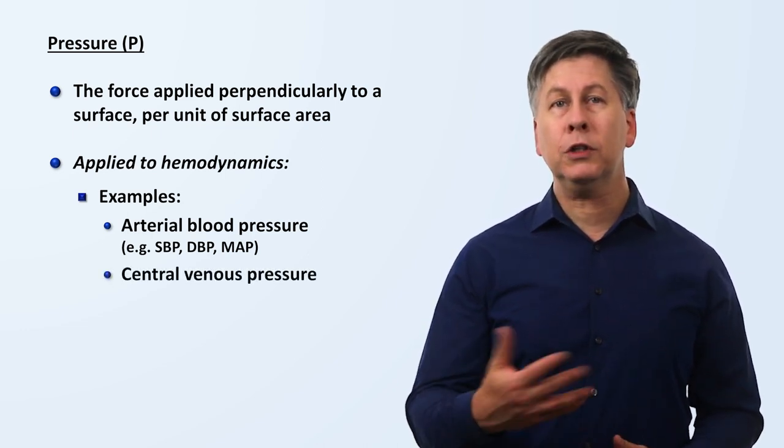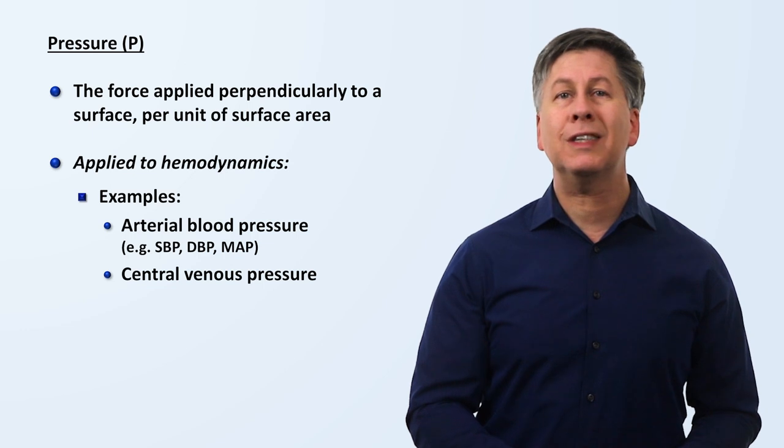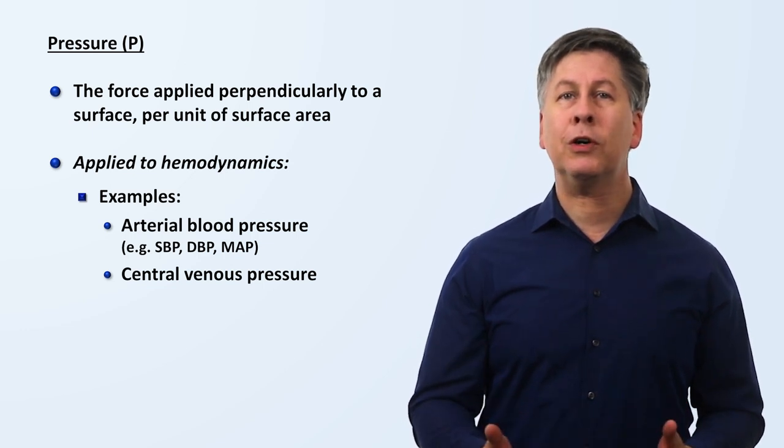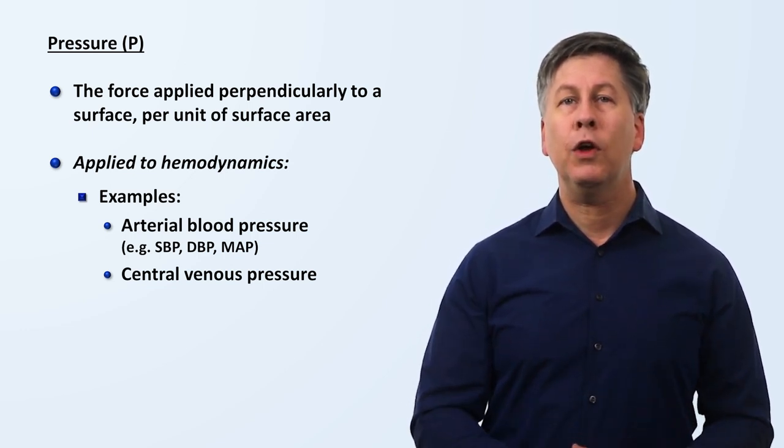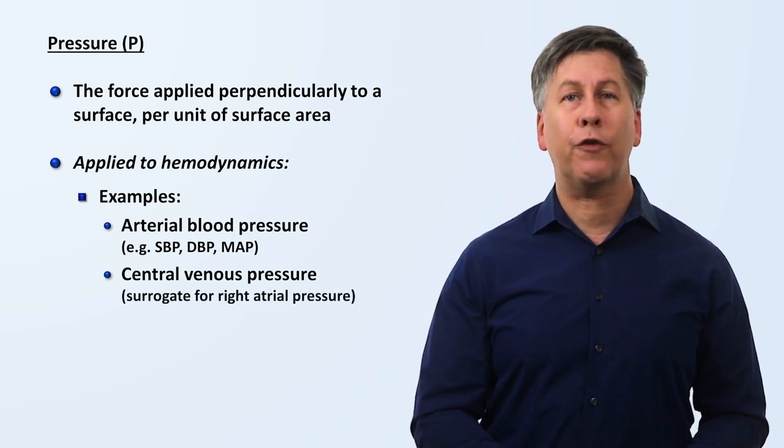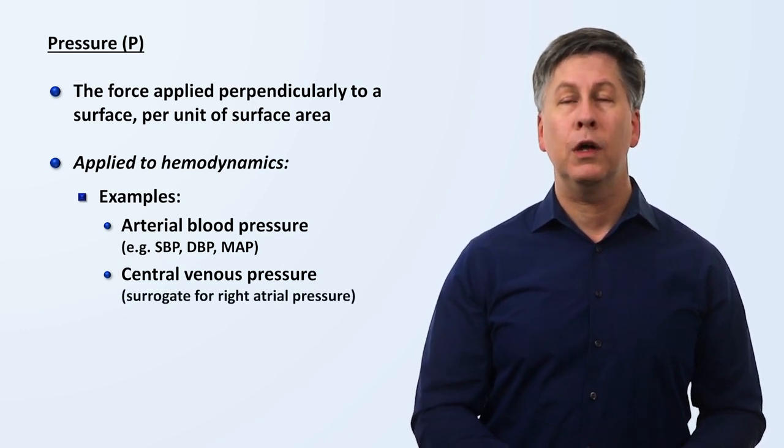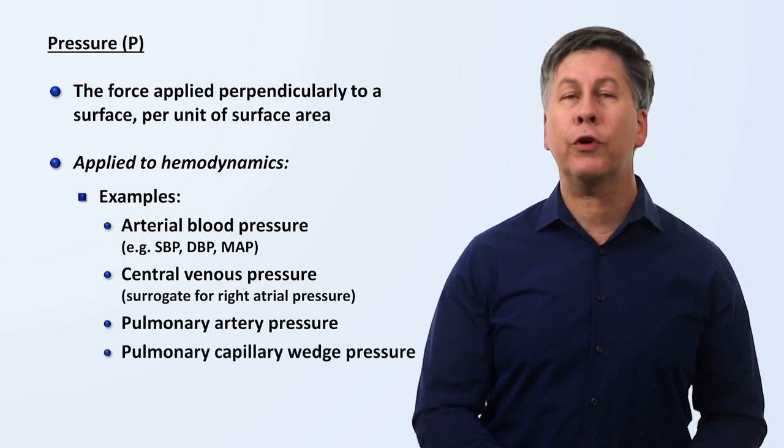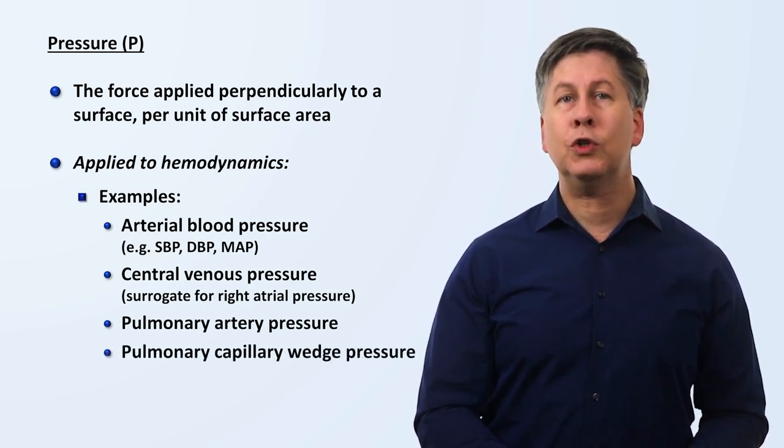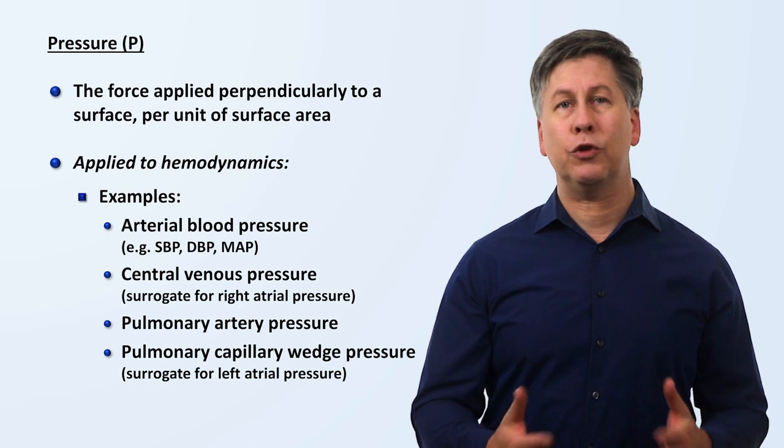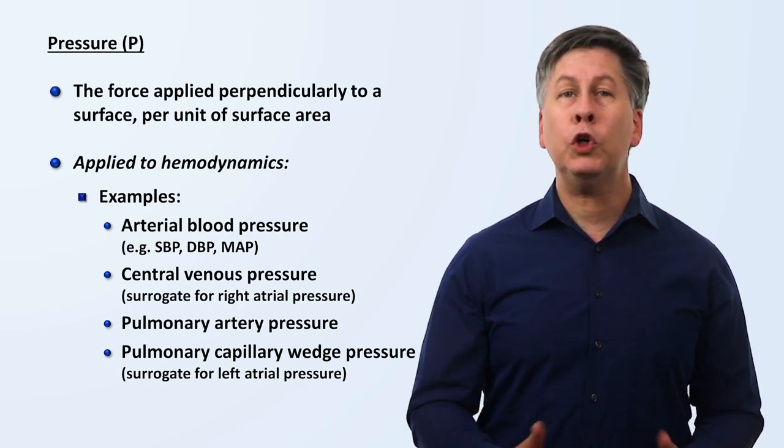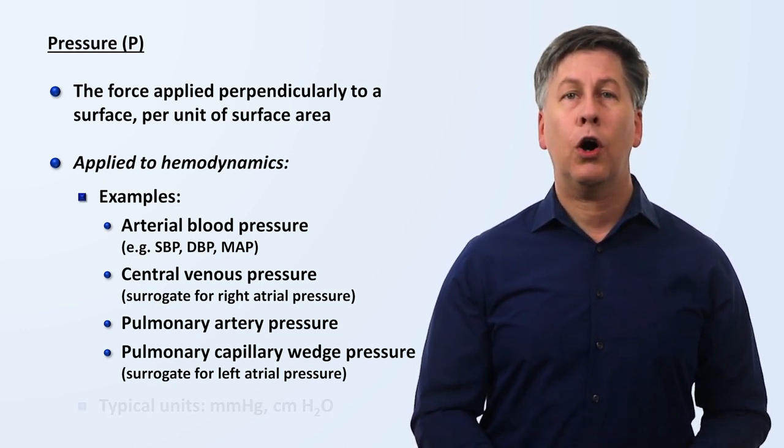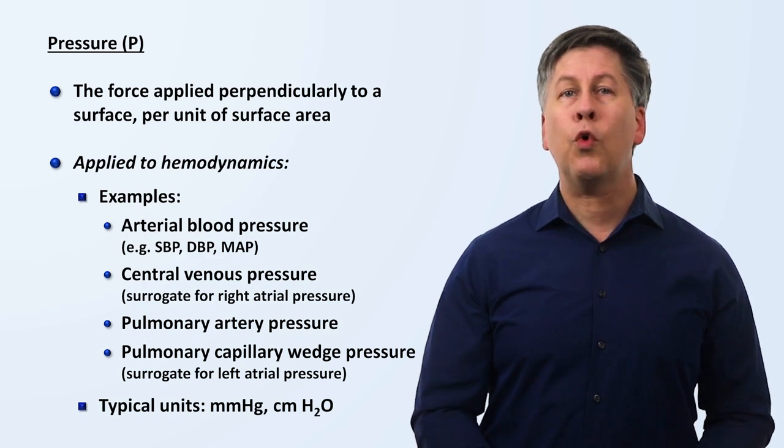Something called the central venous pressure, which I mentioned a second ago, which is the pressure in the distal superior and inferior vena cava, used as a surrogate for right atrial pressure. The pulmonary artery pressure, or something called the pulmonary capillary wedge pressure, which is used as a surrogate for left atrial pressure. The typical units for pressure in hemodynamics are millimeters of mercury, or in the case of physical examination of the jugular vein, centimeters of water.